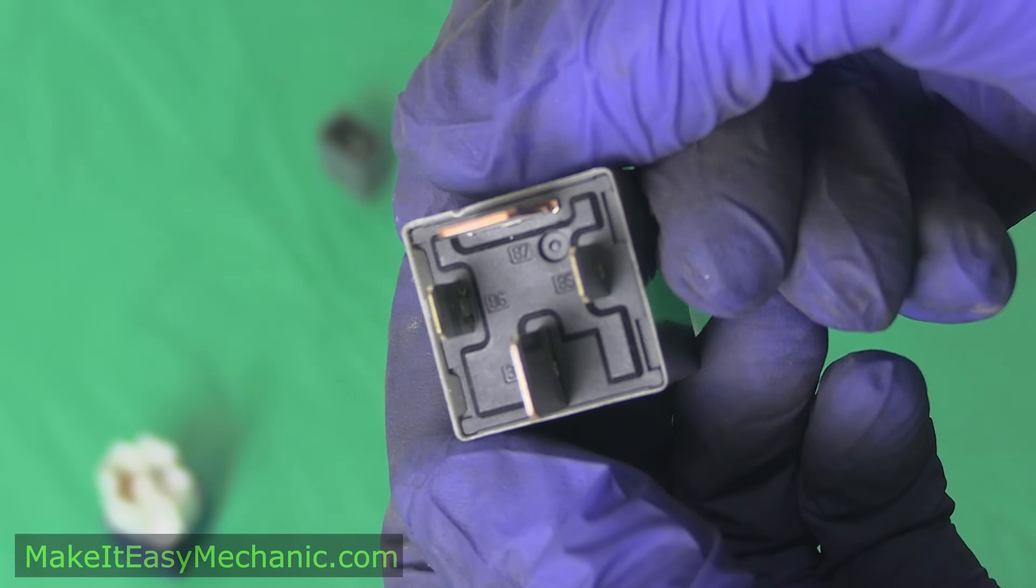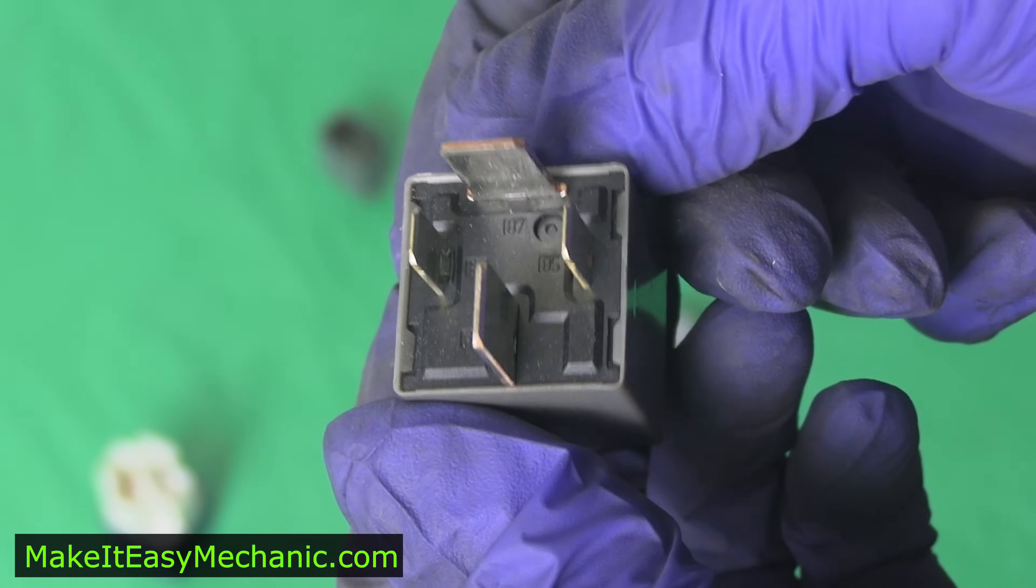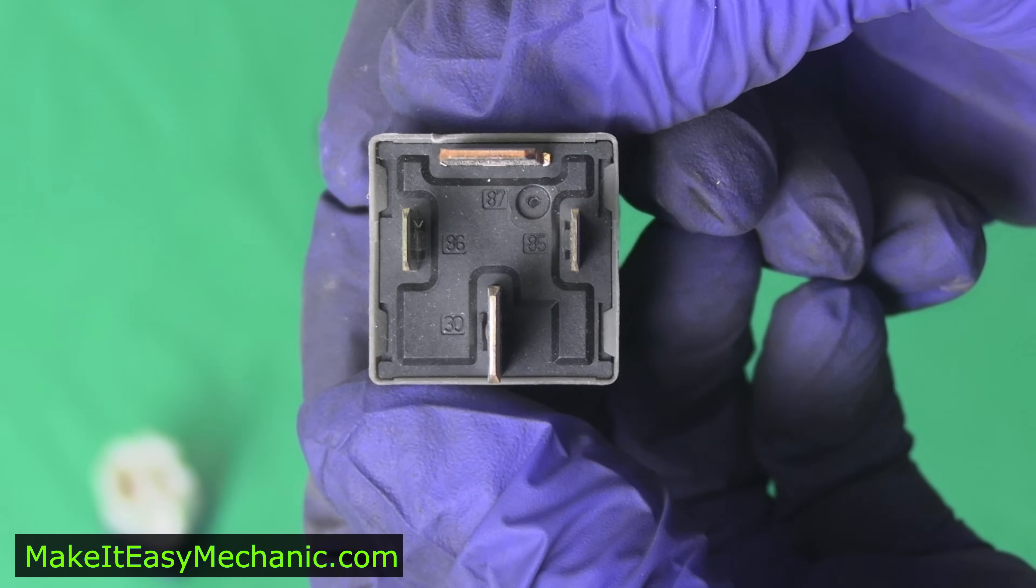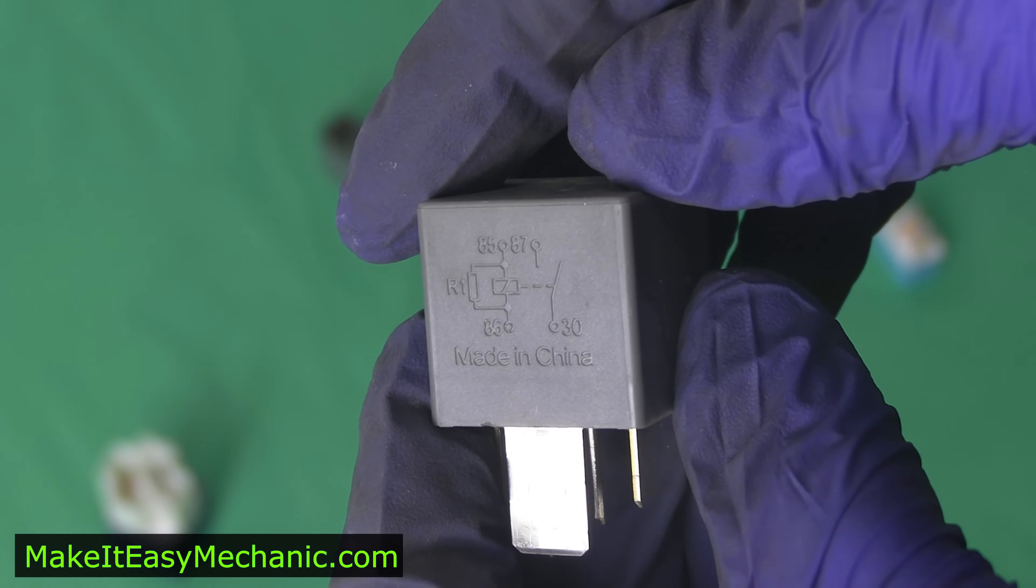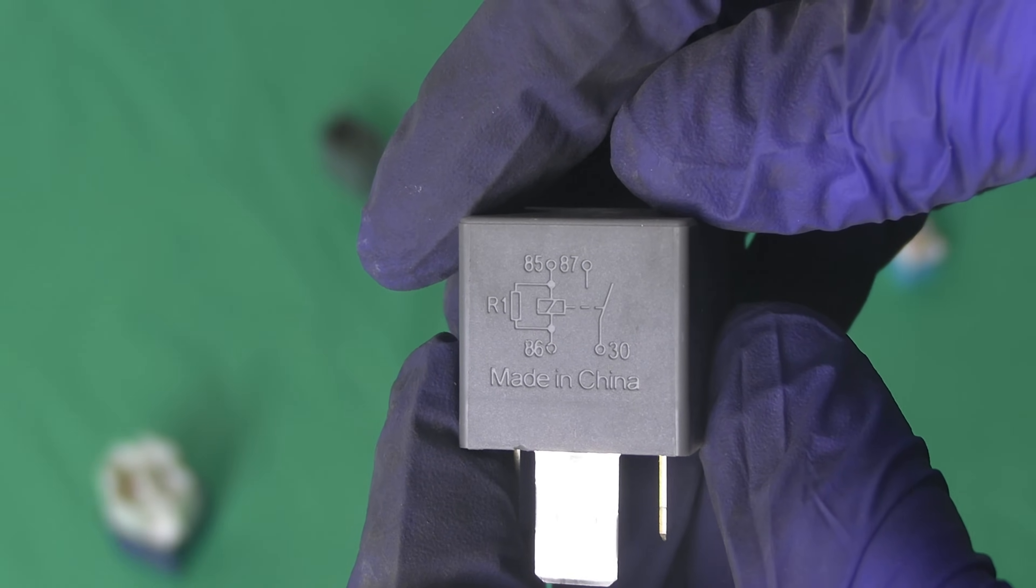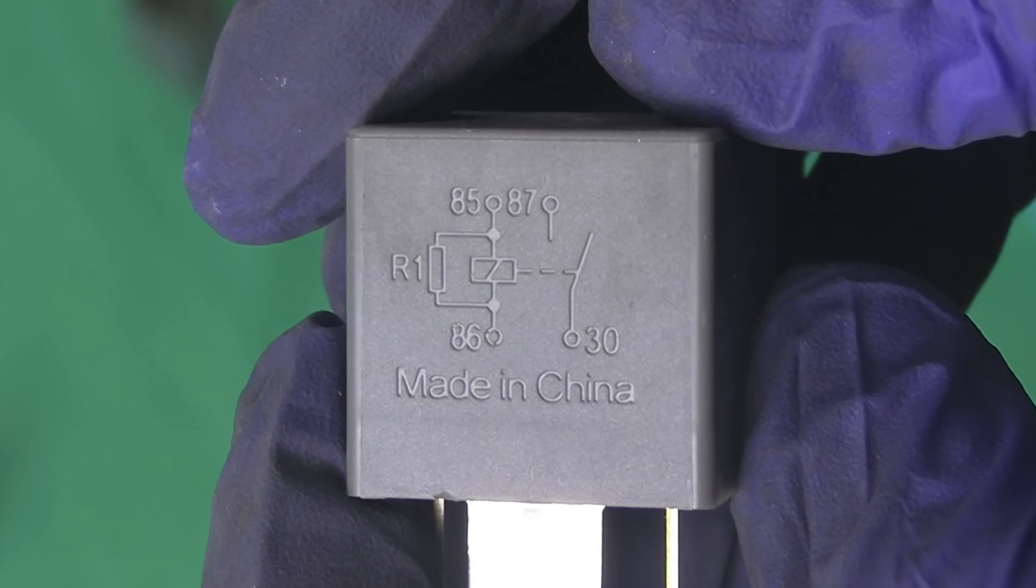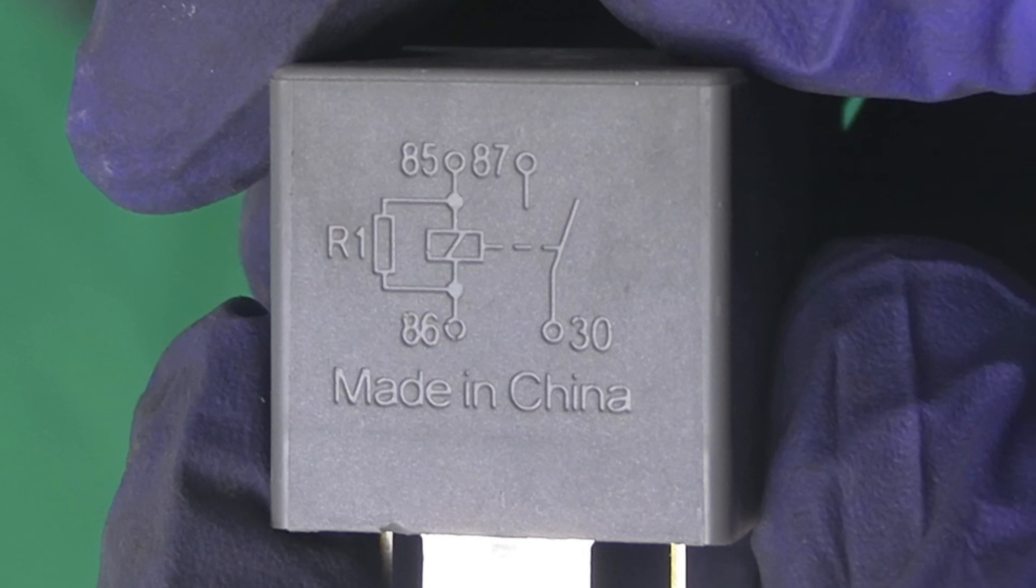So how do we test relays? Most of the time relays will have all the pins numbered and on the side of the relay there will be a diagram showing what pin is what. Most common configuration includes numbers 85, 86, 87 and 30, where 85 and 86 are for the control circuit and 87 and 30 are for the load circuit.